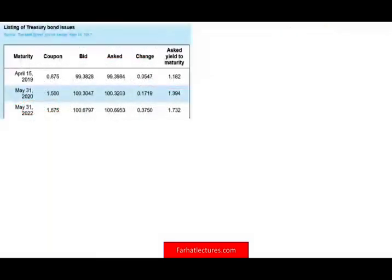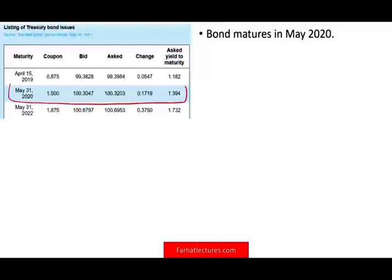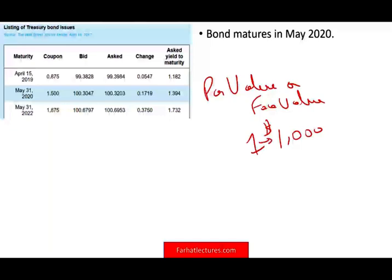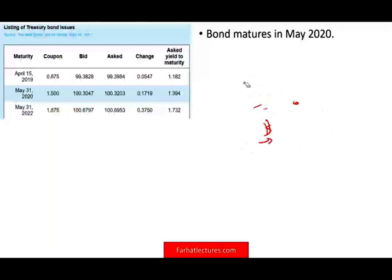Let's look at a bond example to illustrate how we read bonds. This bond matures on May 31st, 2020. So if you lent the government money long ago — bonds go from 10 to 30 years — on May 31st, 2020 you're going to get back the par value, sometimes called the face value. If you bought one bond for $1,000, you're going to get your $1,000 back.